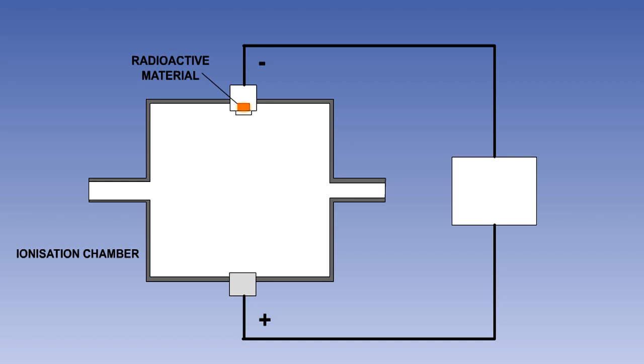The alpha particles generated by the radioactive material ionize the oxygen and nitrogen atoms of the air in the chamber. To ionize means to remove an electron from an atom. When you remove an electron from an atom, you end up with a free electron with a negative charge and an atom missing one electron with a positive charge.